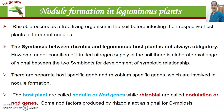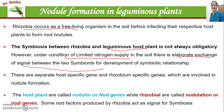Now we come to the process of nodule formation in the leguminous plant. Rhizobium are free-living organisms in the soil before they infect the plant. The association between rhizobium and leguminous plants is not obligatory — rhizobium can survive without the leguminous plant and vice versa. When the plant has a limited nitrogen supply, it sends signals to the rhizobia in the form of various chemicals, and the rhizobia and host plant interact.